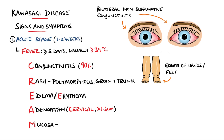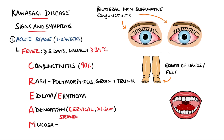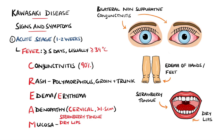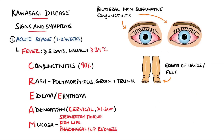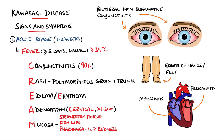M is for mucosal involvement, which can include strawberry tongue, dry fissured lips, or injection, meaning redness, of the pharyngeal or lip mucosa. Myocarditis or pericarditis may also be present in the acute phase.